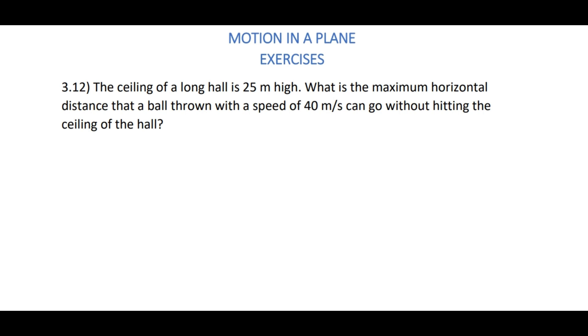Hello students, in this video we are going to discuss problem 3.12 from motion in a plane as per the new textbook. The ceiling of a long hall is 25 meters high. What is the maximum horizontal distance that a ball thrown with a speed of 40 meters per second can go without hitting the ceiling of the hall?